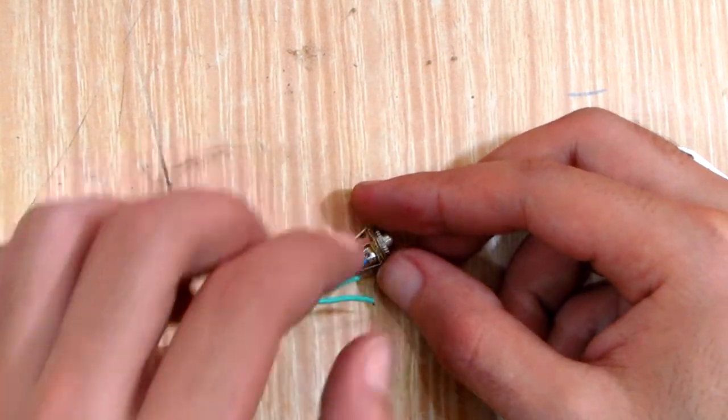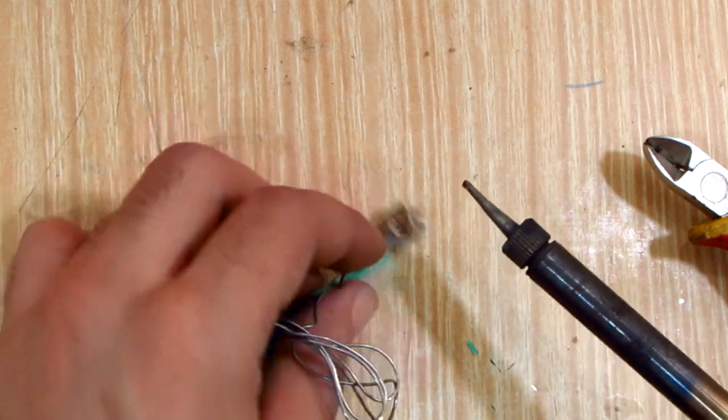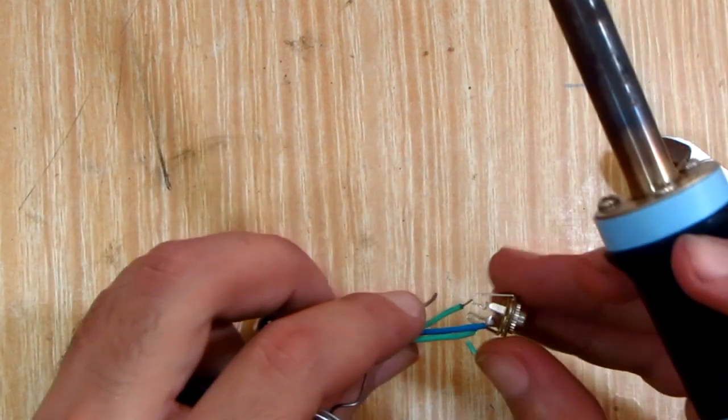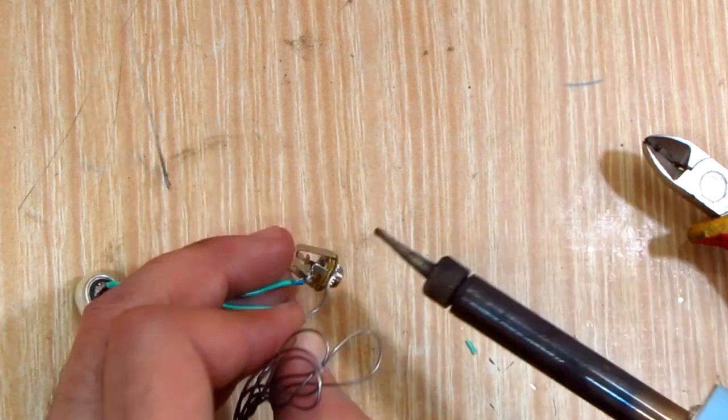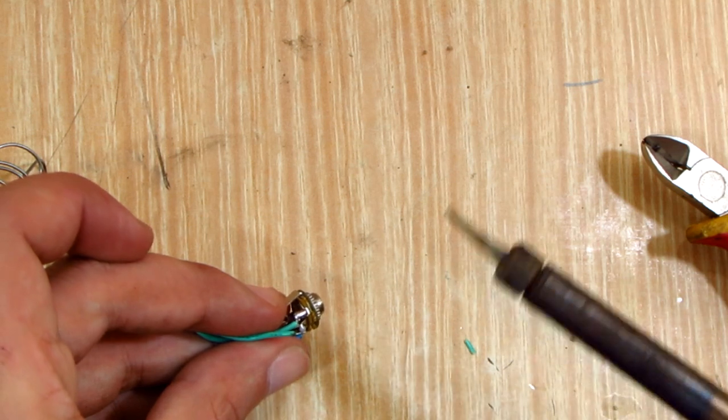I soldered the negative wire which is the ground now to the ground pin of the female jack, then the other wires to the left and the right pins.